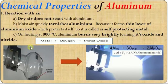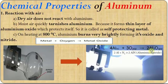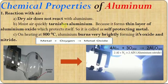In the experiment, Aluminium powder is taken in a round-bottom flask and heated to around 800 degrees centigrade. You can see the Aluminium brightly burns, forming Aluminium oxide and Aluminium nitride. The balanced reaction is: 4Al + 3O₂ → 2Al₂O₃. Similarly, Al + N₂ → AlN. Moist air quickly changes Aluminium because it forms a thin layer of Aluminium oxide on the surface.